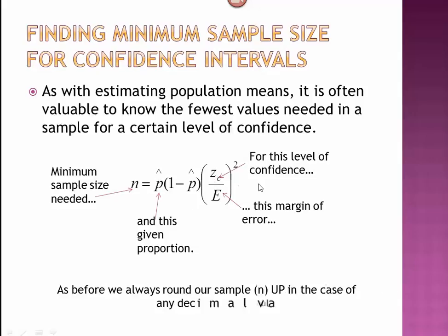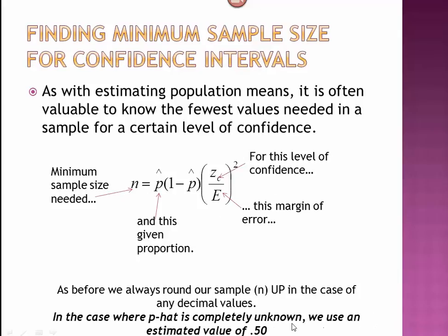Of course, once we get our results, we're always going to round up. But here's what we do in this case where we don't know p-hat. In the case where p-hat is completely unknown, which would be in most studies, we use an estimated value of 0.5.